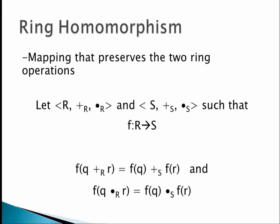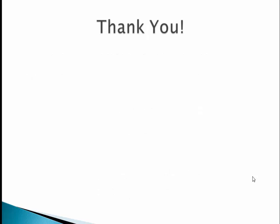Finally, a ring homomorphism is a mapping that preserves both ring operations. Let R and S both be rings under addition and multiplication, with a function f: R → S. For this to be a homomorphism, both operations must be preserved: f(q + r) = f(q) + f(r) under addition in S, and f(q · r) = f(q) · f(r) under multiplication in S. Thank you, I hope you enjoyed listening.